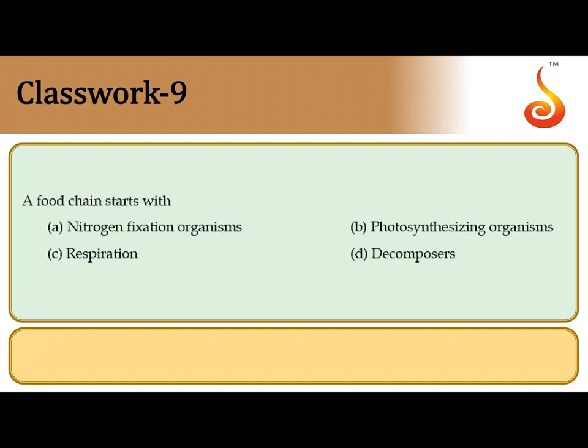The ninth question asks what a food chain starts with. A food chain starts with organisms that capture radiant energy from the sun and convert it into organic matter — these are producers. Producers are capable of photosynthesis, so photosynthesizing organisms always form the base of a food chain.